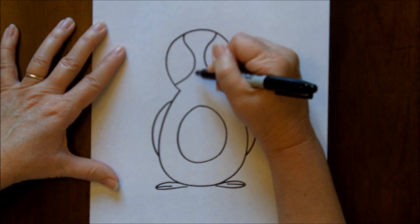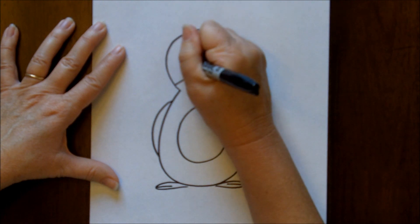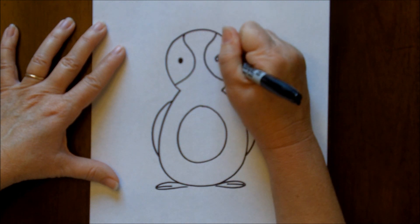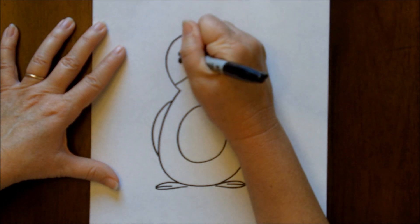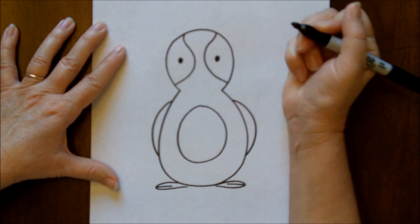It's kind of curve in and curve out, curve in and curve out. And then we can add some eyes. And if you'd like to turn your penguin into a girl penguin, you can just put some eyelashes over each eye.